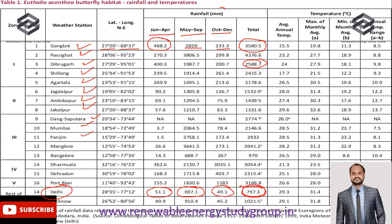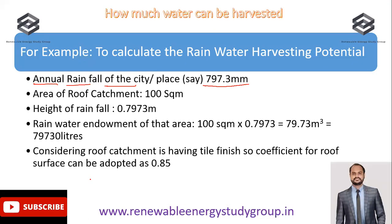We consider this total annual rainfall of 797.3 mm when designing a rainwater harvesting system for this city. Next, we need to know how much catchment area is available. For a rooftop rainwater harvesting system, we must know the rooftop catchment area — for example, if a house has 100 square meters of rooftop area.